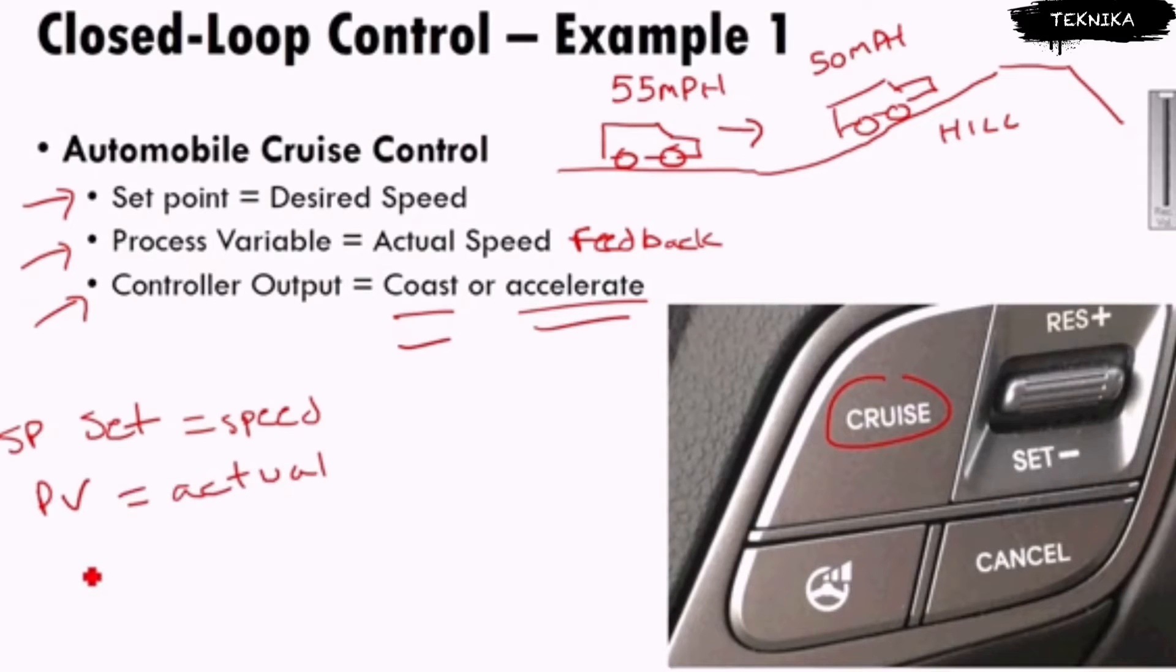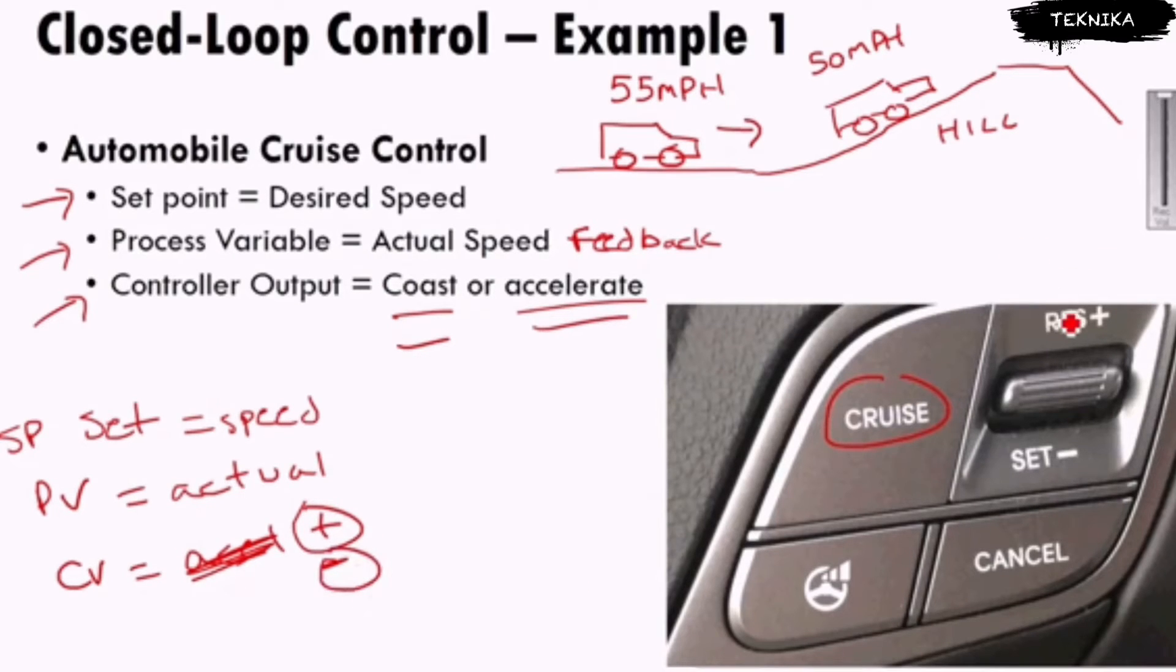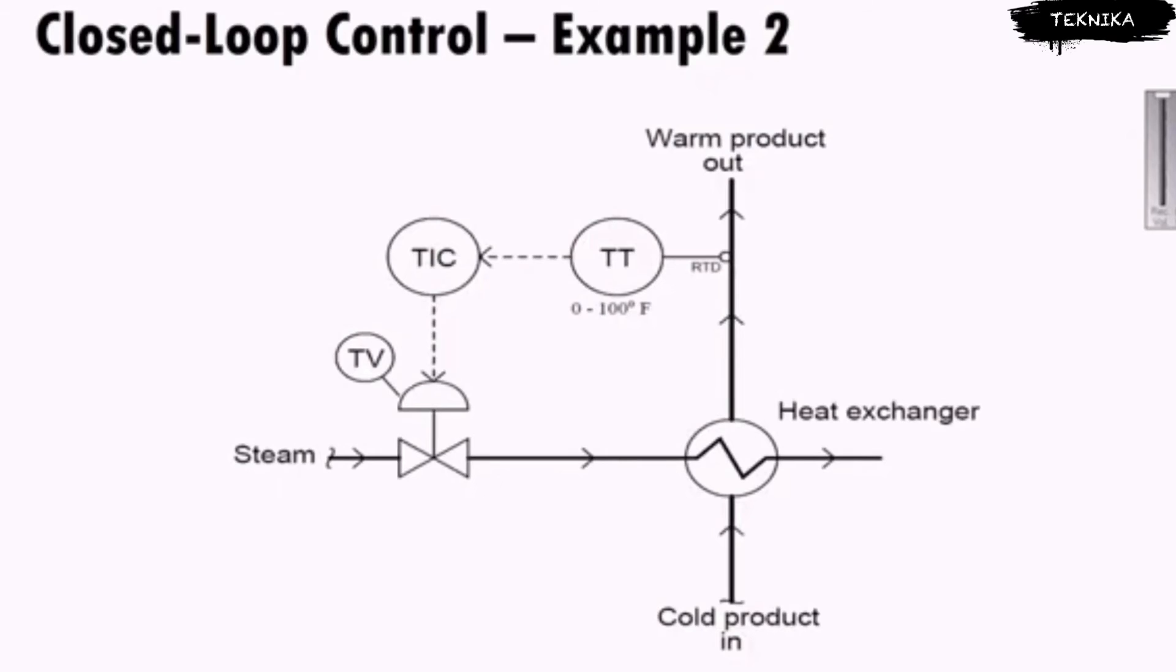The control variable or the controller output is what do I need to do - do I need to go faster or do I need to go slower? We don't want to have to hit these buttons; we want the computer to make that decision for us. It's going to speed up or slow down to maintain me at 55 miles an hour regardless of hills or other things that are going on.